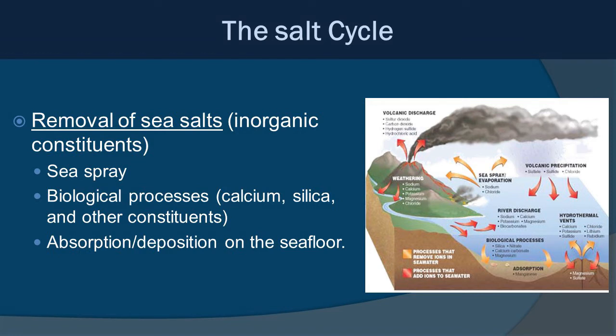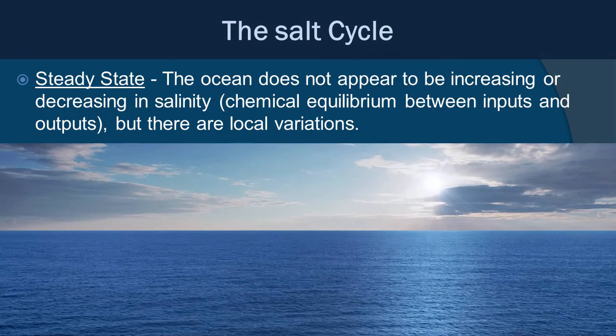Several processes remove sea salts from the water. Sea spray — as waves crash along the shore, droplets carry salts up into the air, and as the water evaporates it leaves the salts behind. This is also a source of degradation of man-made structures along the beach. Biological processes are a huge removal mechanism — marine organisms use calcium, silica, and other constituents to build their exoskeletons, bones, and endoskeletons. Then there is absorption and deposition on the sea floor, where salts get deposited for long periods of time.